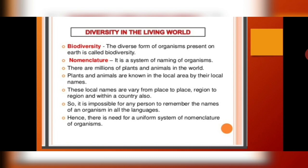Next, nomenclature. What is nomenclature? In Hindi we call it naamkaran. Similarly, in science also, whenever a new organism is discovered, that organism is named according to certain rules. So the system of naming of organisms is known as nomenclature. There are millions of plants, animals, and other microorganisms present on the earth. Plants and animals are known in the local area by local names.